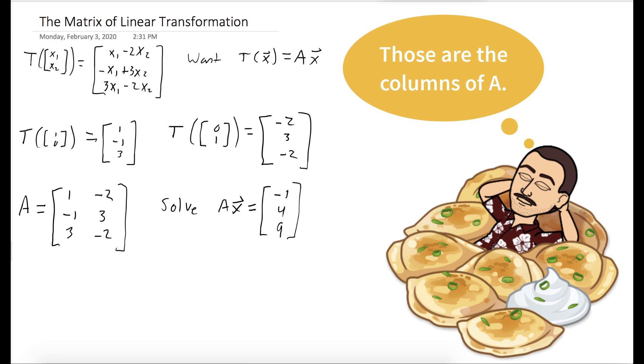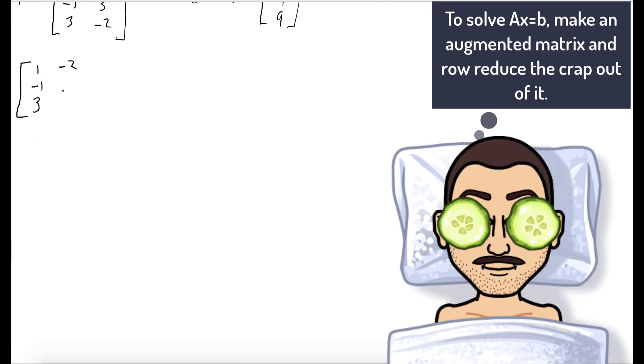The way we do that is we set up an augmented matrix and we row reduce until we get to reduced row echelon form. We've done this so many times that I'm doing it in fast forward today.